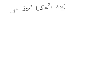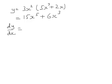Let's look at y equals 3x squared bracket 5x cubed plus 2x, and we're going to find dy by dx. What we do is expand the brackets, so it's 15x to the power 5 plus 6x cubed. So dy by dx is 75x to the power 4 plus 18x squared.